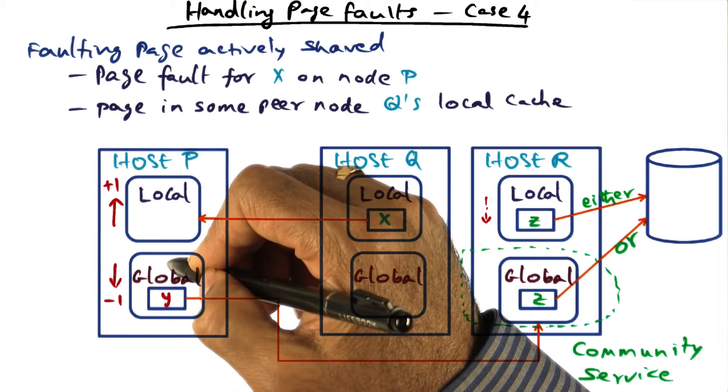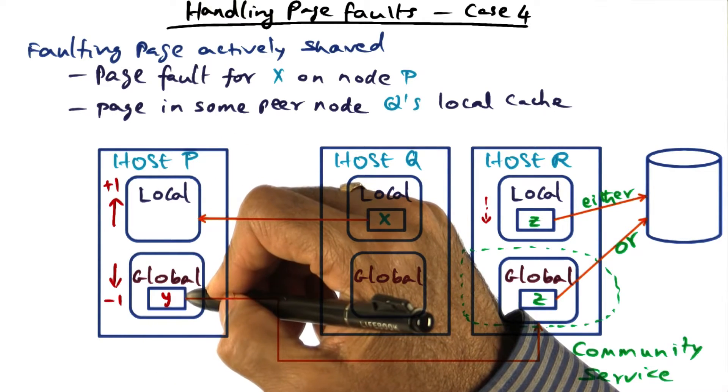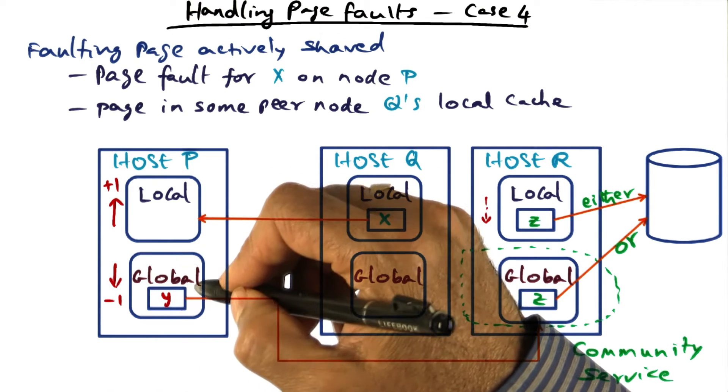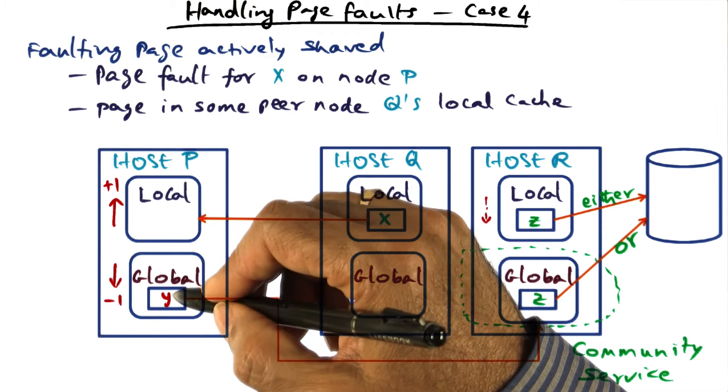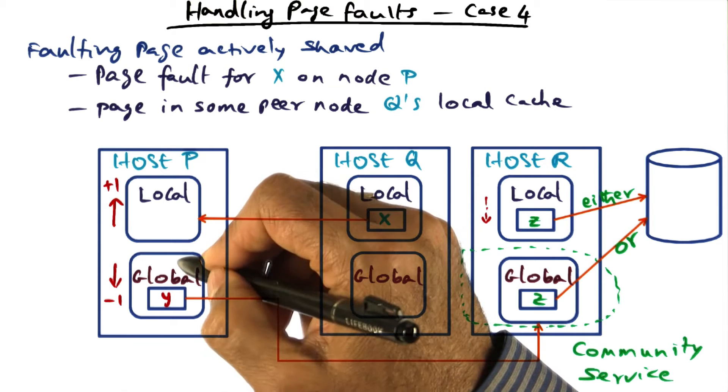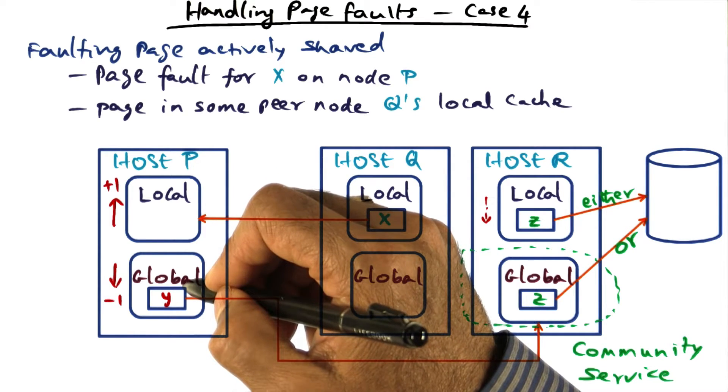So the global part has to shrink by one. So this goes up by one, this goes down by one. Pick again some arbitrary page from the global part. What we're doing is we're going to take this Y and host it in some other peer cache.